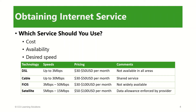Another technology is cable, provided by cable TV companies. This service runs over the copper coaxial cable that is part of the cable TV system. Cable provides speeds up to 30 Mbps depending on the provider, and monthly subscription rates hover between 30 to 50 US dollars. Subscribers in the same neighborhood share a connection with their neighbors and often experience a slowdown in service when other subscribers connect to the network.